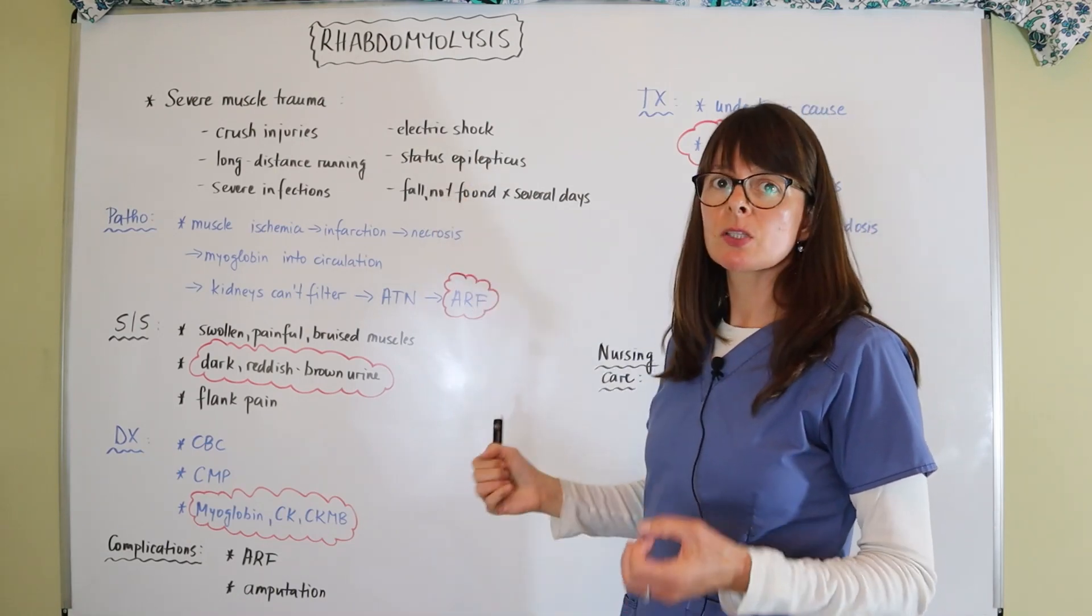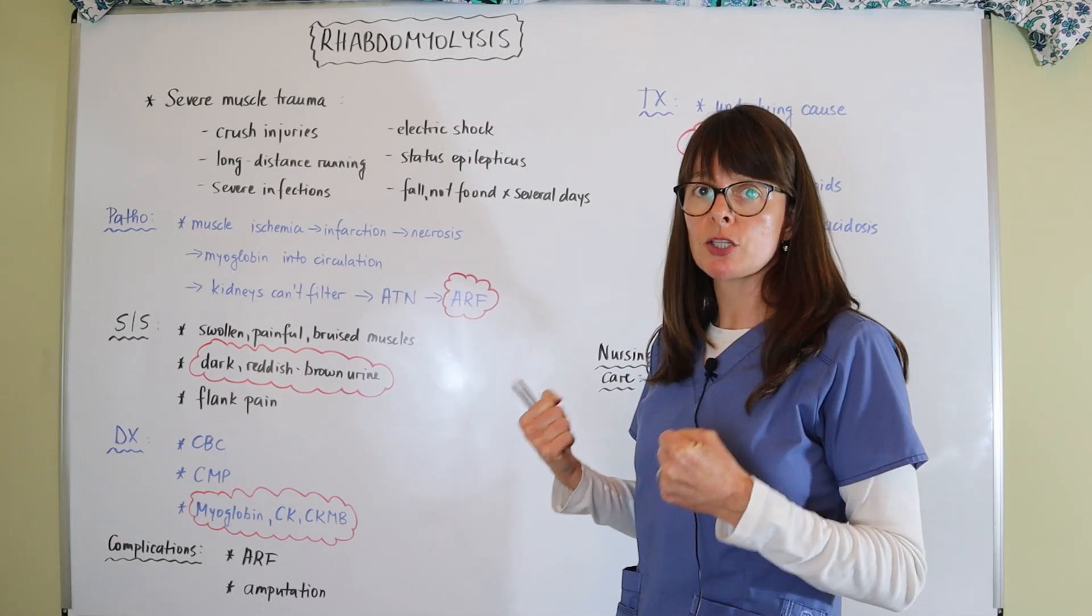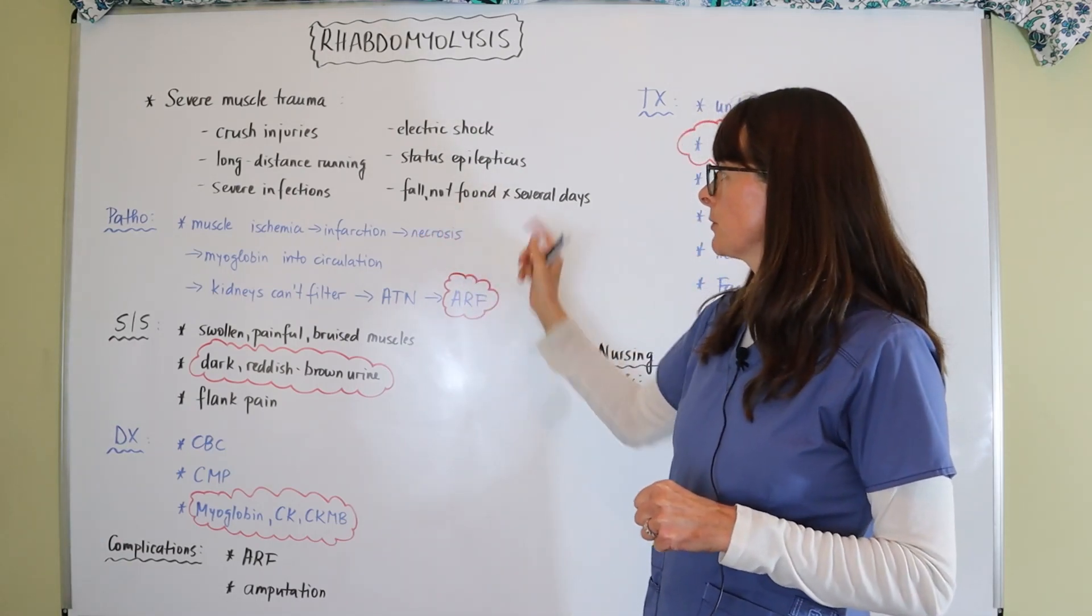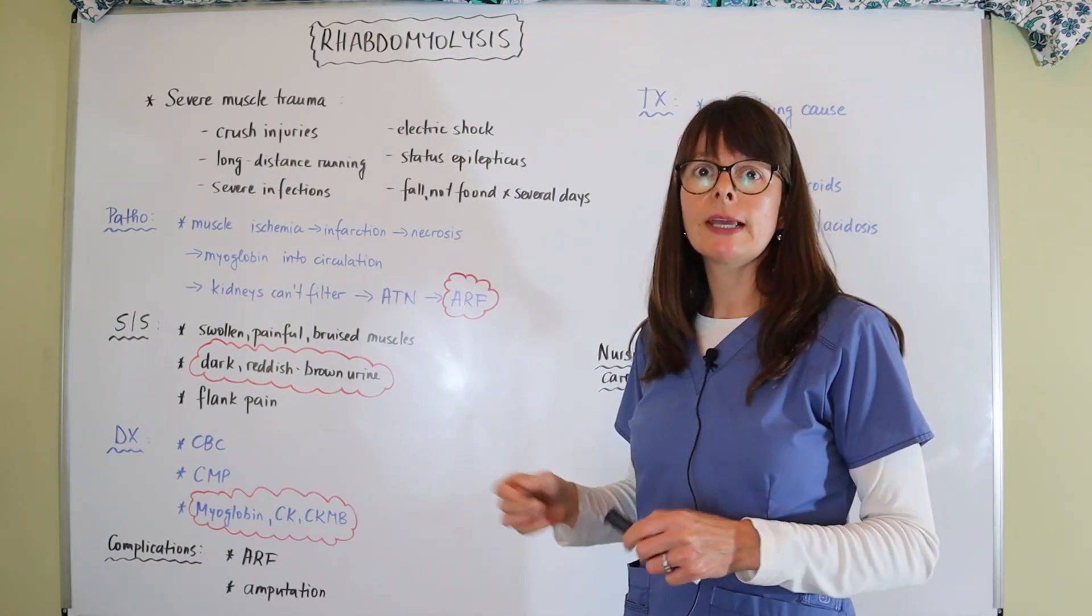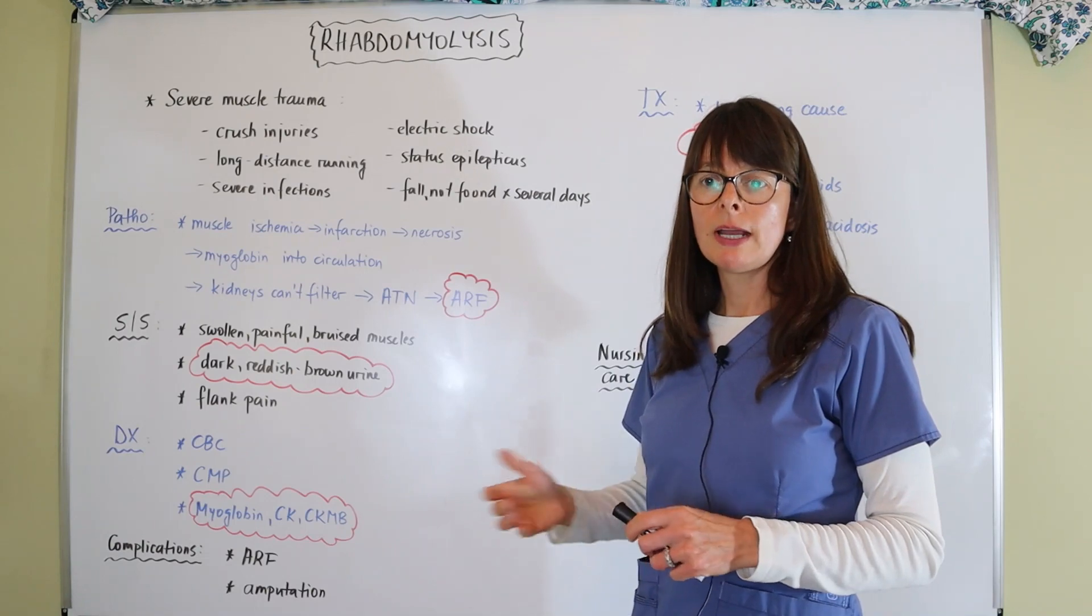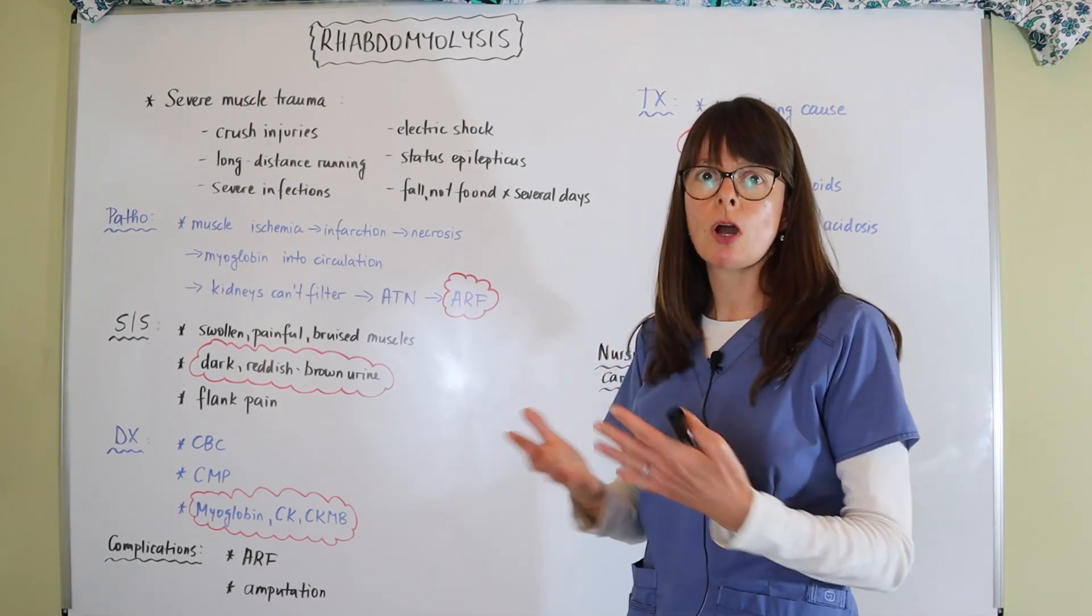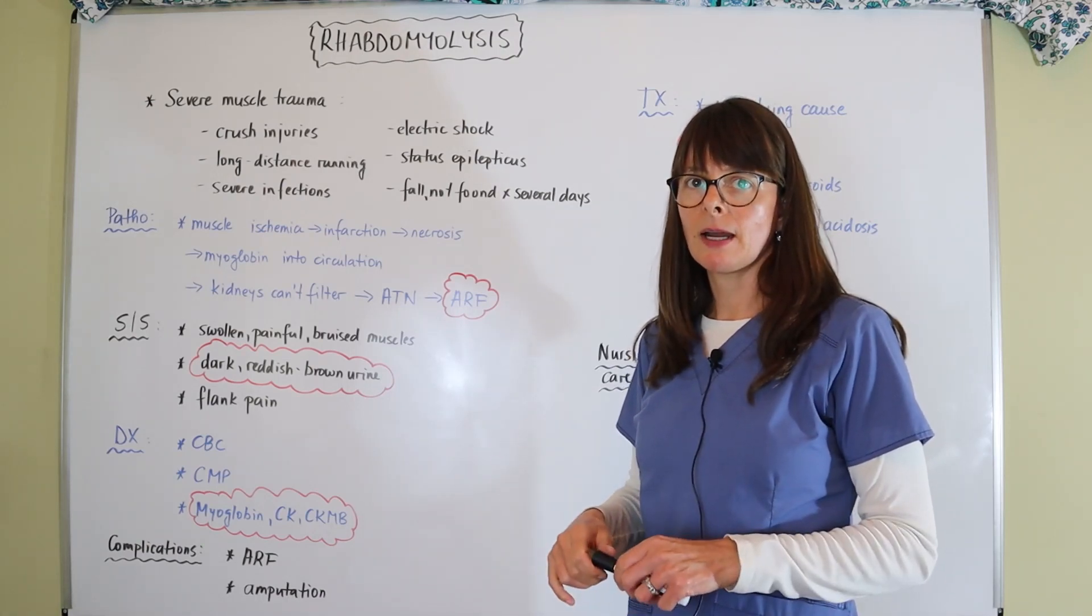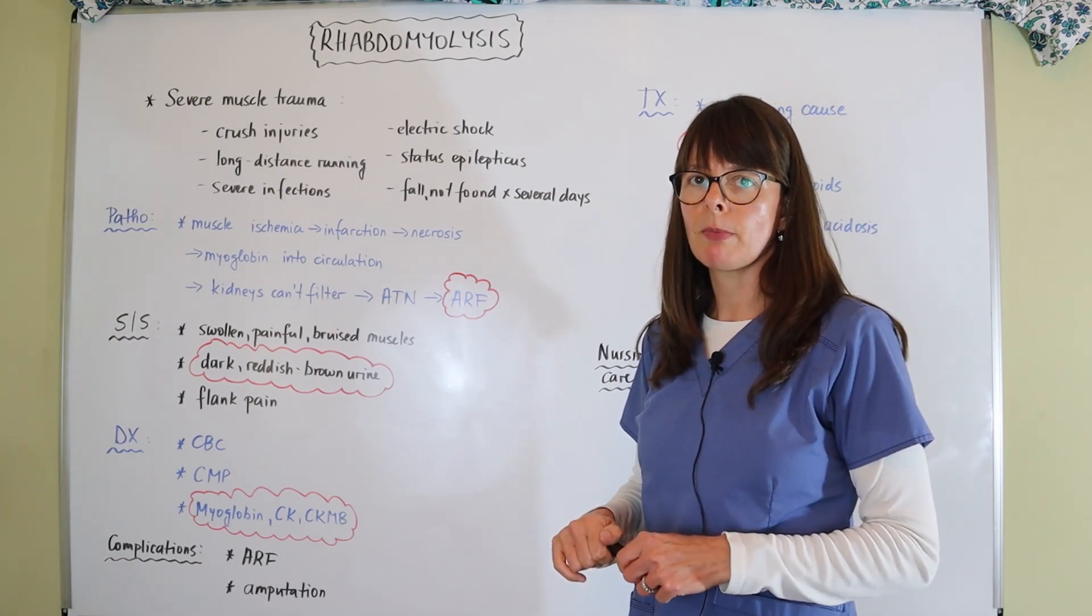Status epilepticus where there's just such intense force of muscle contraction for a prolonged period of time, or fall not found for several days. This can be an elderly person or really anybody at home who has a fall and just lays there and has any kind of muscle trauma and just does not move for several days. And then they get to be in rhabdomyolysis.